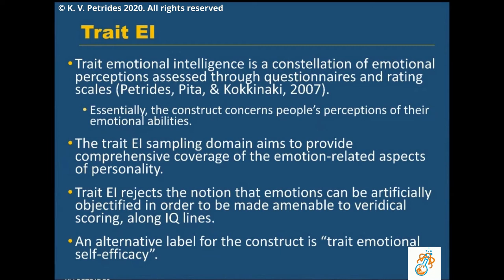The main differentiation between intra- and interpersonal aspects in my theory is reflected in the trait emotional intelligence versus trait social intelligence divide. The main aspects of interpersonal relationships are covered through trait social intelligence, where trait emotional intelligence focuses more on emotional and intrapersonal aspects. Trait EI is mainly intra- and trait social intelligence is mainly inter-, where intra means within and inter means between.